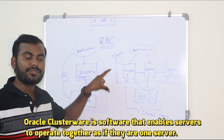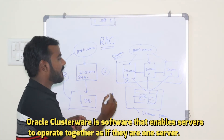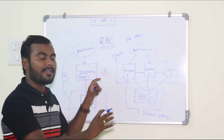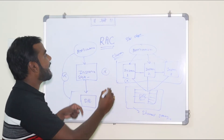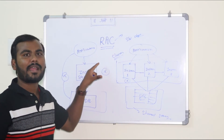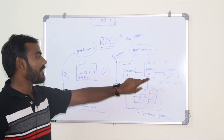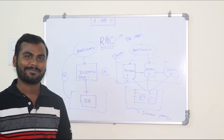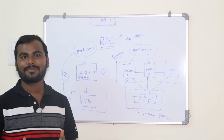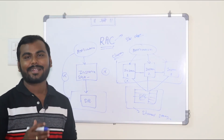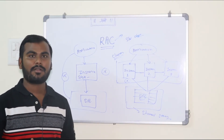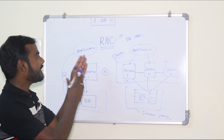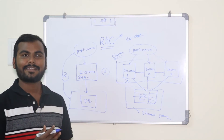To create this multi-instance architecture, Oracle provides a software called Clusterware. Using Clusterware, we can create this multi-node instance architecture which is called RAC - Real Application Cluster. RAC says: if one of the instances goes down, we still have another two instances available. This is called the high availability concept, and this is the core architecture of how RAC works.